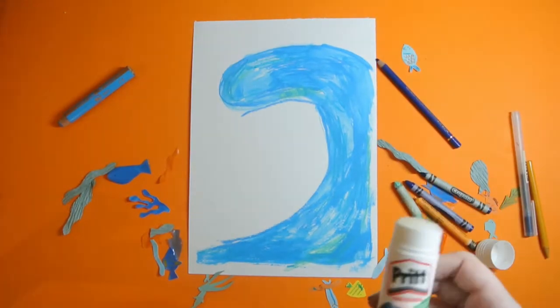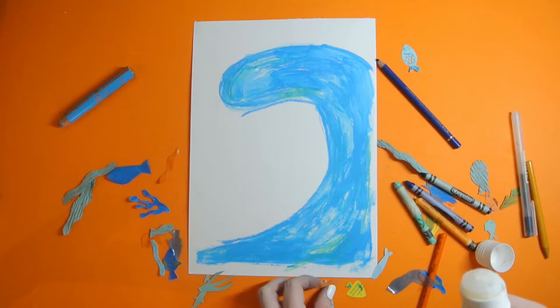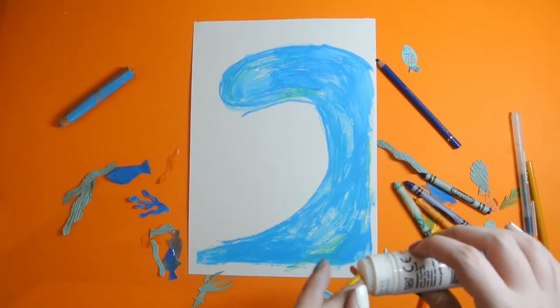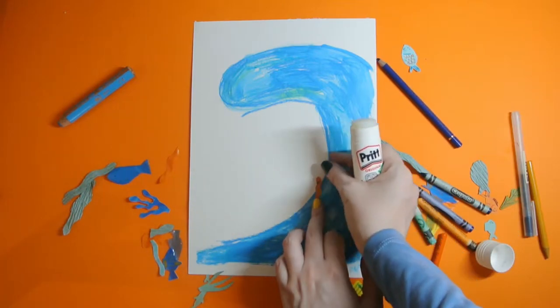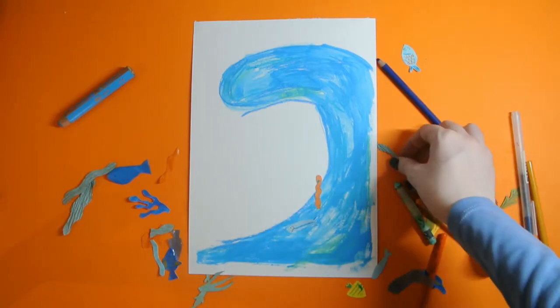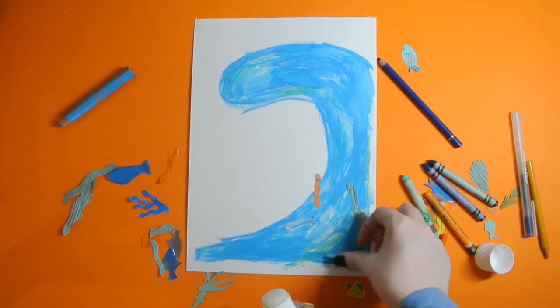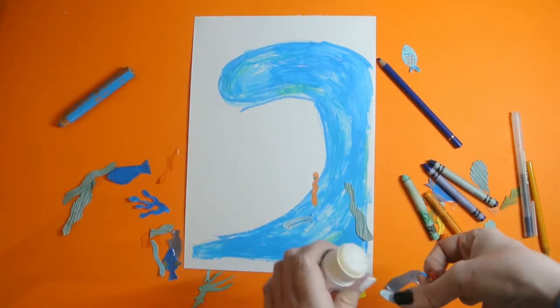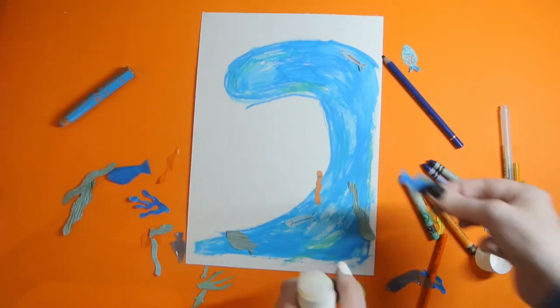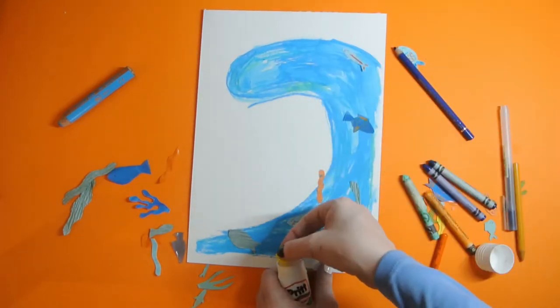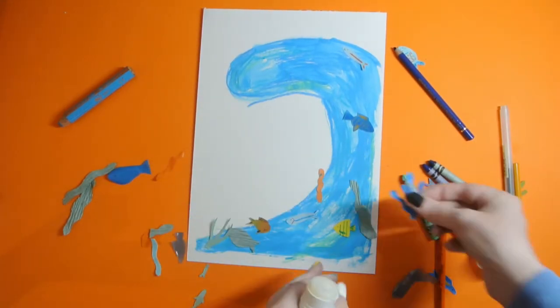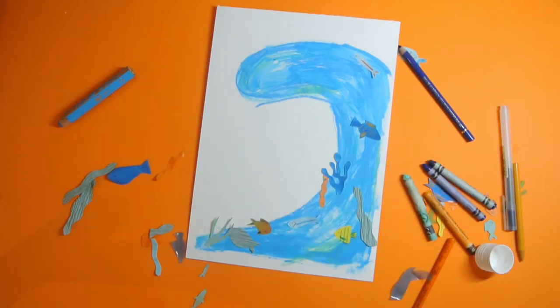So once the base is all filled in we can go ahead and start sticking down all of our pieces using a glue stick. Just thinking about the direction that you'd like the plants and the fish to be in. And try and put some contrasting colours next to each other as well, so there's a nice variety throughout the Giant. Take your time, you don't have to rush. If you wanted to, you could maybe place the pieces down before sticking them, so you can really play around with the positioning and where you'd like them to go.